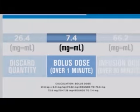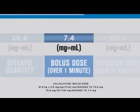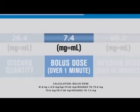Next, prepare the bolus dose. The bolus dose is 10% of the 0.9 milligrams per kilogram dose. In this case, remove 7.4 milligrams or milliliters. Prepare it one of the following ways.